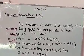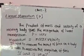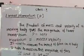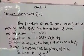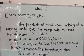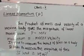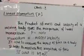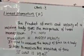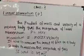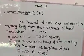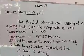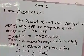Hi students, now I am going to teach 10th standard physics — linear momentum, or momentum P. What is meant by momentum? The product of mass and velocity of a moving body gives the magnitude of the linear momentum. Momentum P is equal to mass M into velocity V.